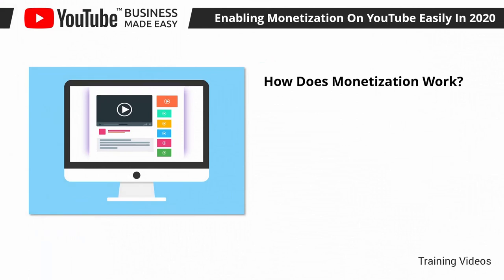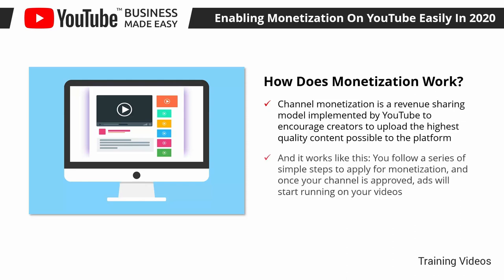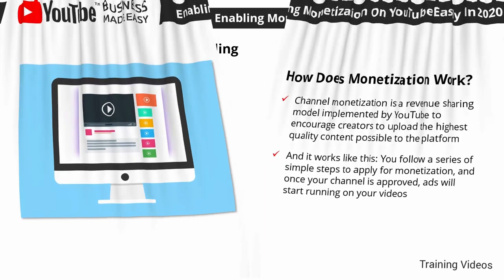How does monetization work? Channel monetization is a revenue-sharing model implemented by YouTube to encourage creators to upload the highest quality content possible. The more a creator is able to engage viewers and increase watch time, the more money they can make. It works like this: you follow a series of simple steps to apply for monetization, and once your channel is approved, ads will start running on your videos. Each time a viewer completes watching an ad for a certain period of time, the advertiser pays YouTube, and you get a cut from that payment.